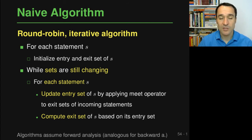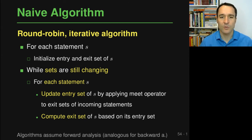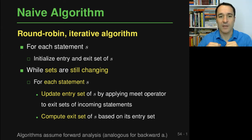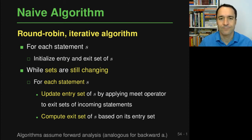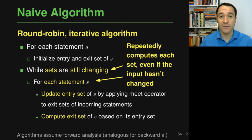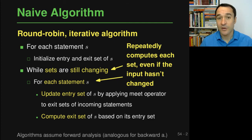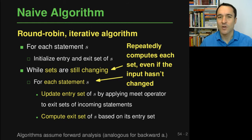Note that this algorithm assumes a forward analysis — we first update the entry set and then compute the exit set. For a backward analysis you would first update the exit sets and then propagate backward by computing the new entry set. The big problem with this algorithm is that it repeatedly computes each of these sets even if nothing has changed and even if none of the inputs used for computation have changed, which is inefficient.